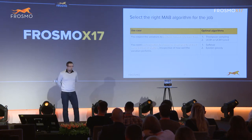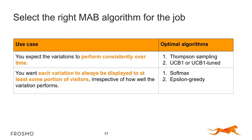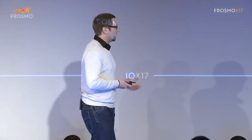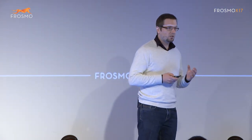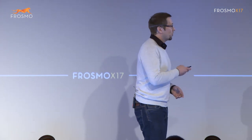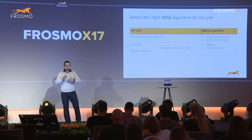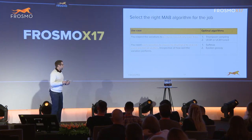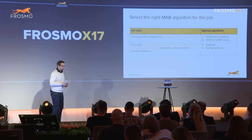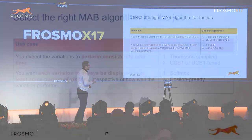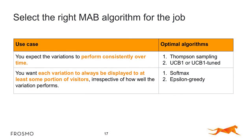Now about use cases. If you expect the variation to perform constantly over time — with a steady click-through rate or conversion rate — then use the default Thompson Sampling, or if that doesn't work, the Upper Confidence Bound algorithms. If you need to show each variation to at least a certain percentage of users at all times — since Thompson Sampling and UCB may converge to showing only one piece of content — then use Softmax or Epsilon Greedy, which always show each content to at least some portion of users.